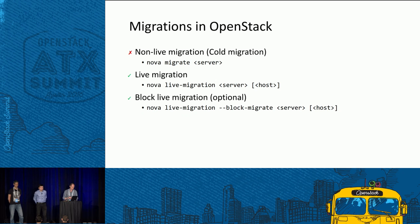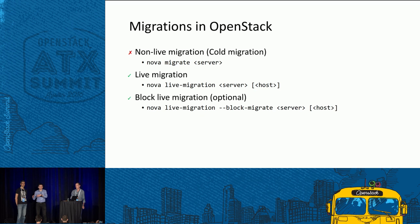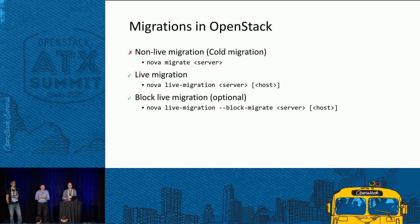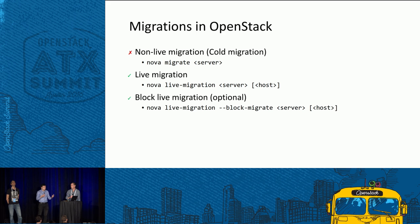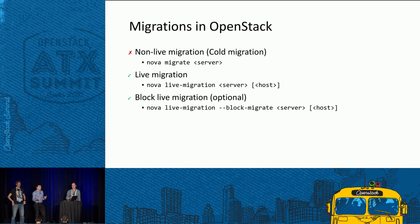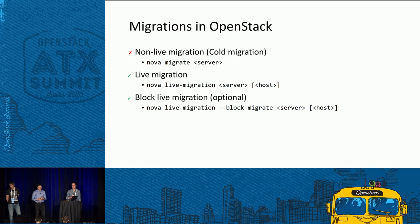There are three types of migrations in OpenStack. First, there is non-live migration, also called cold migration — it stops the VM on the source node, transfers it to destination, then resumes it. We won't cover this since it is not live. The second is live migration: moving a VM to destination while it keeps operating. The third is block live migration, which is optional. To use both live migration and block live migration, you use the nova live-migration CLI command, providing a server ID and optionally a host — though providing a host skips the scheduling phase. The difference is that live migration transfers only memory state, while block live migration transfers both memory state and disk state.